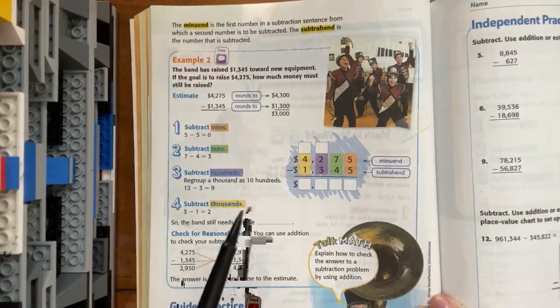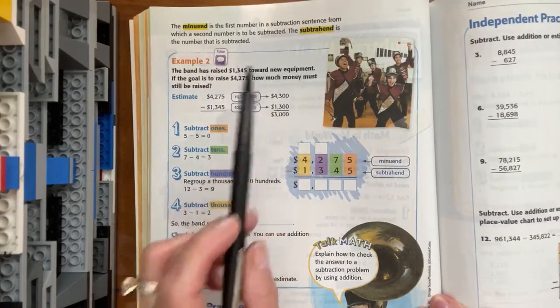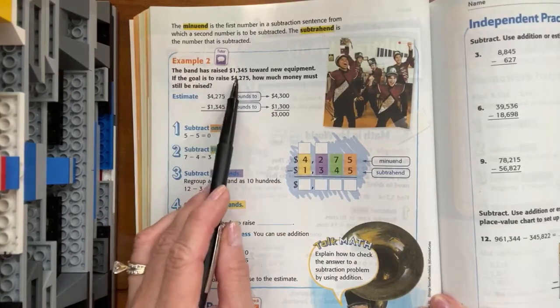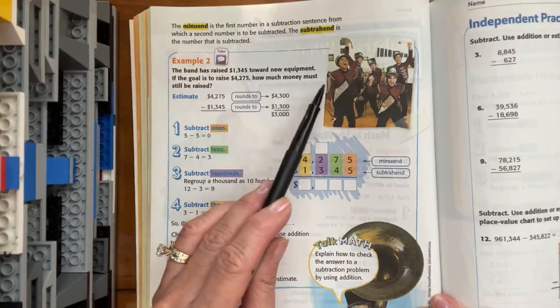So let's look at example two. The band has raised this much money towards new equipment, but their goal is to raise 4,275. So how much money still needs to be raised?